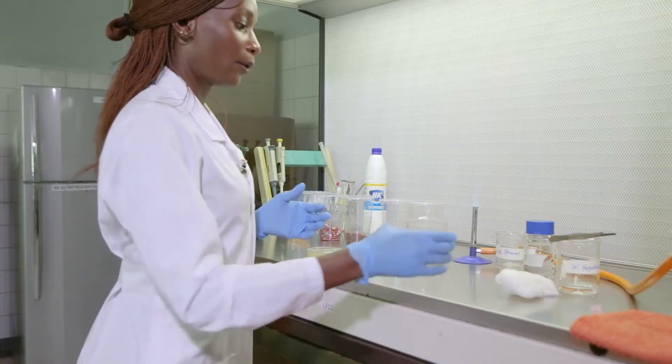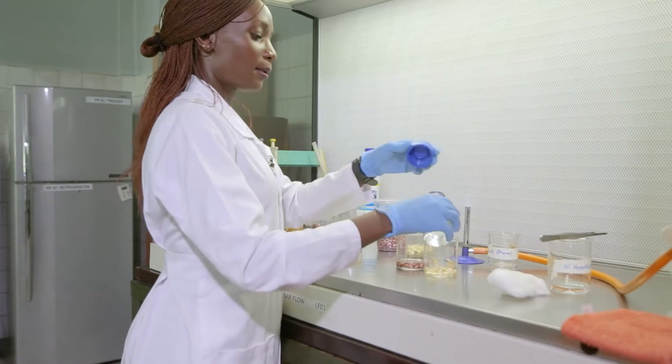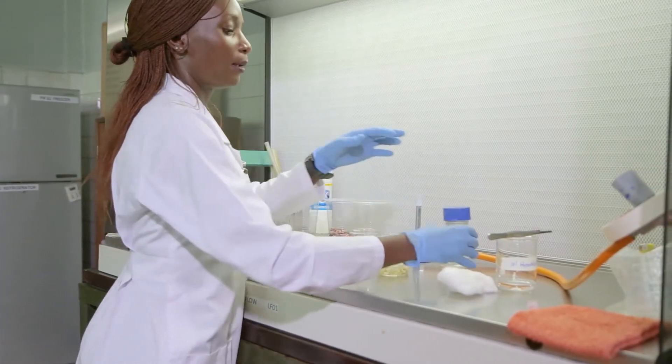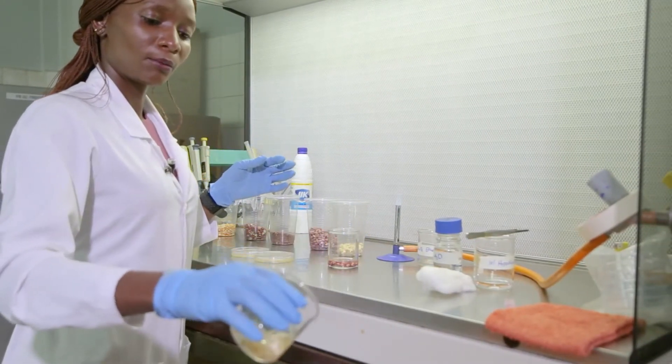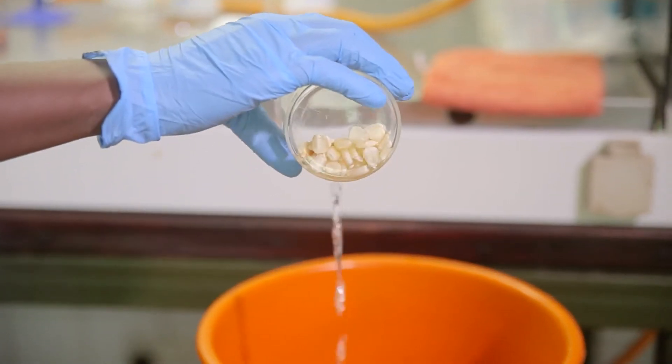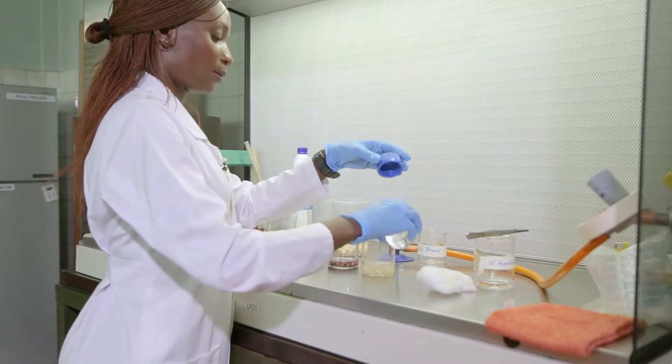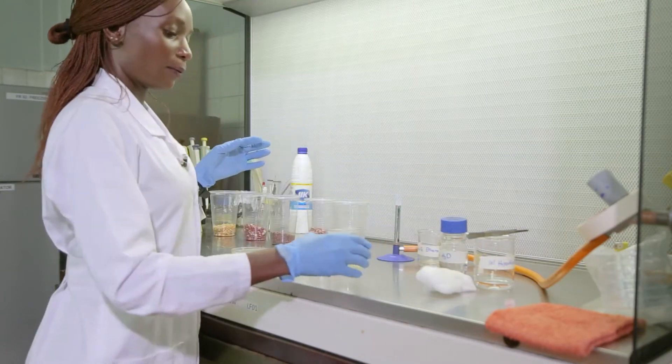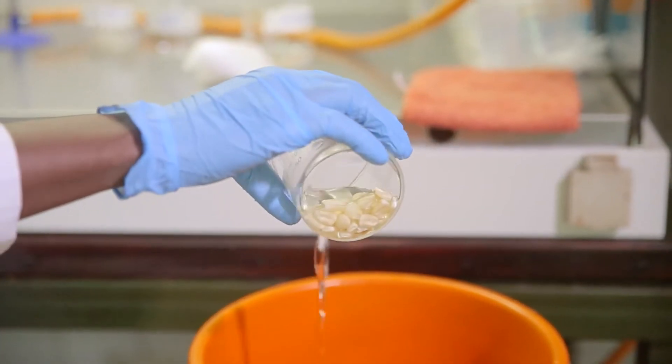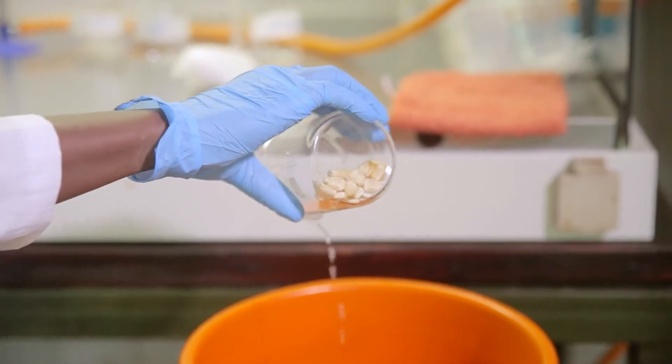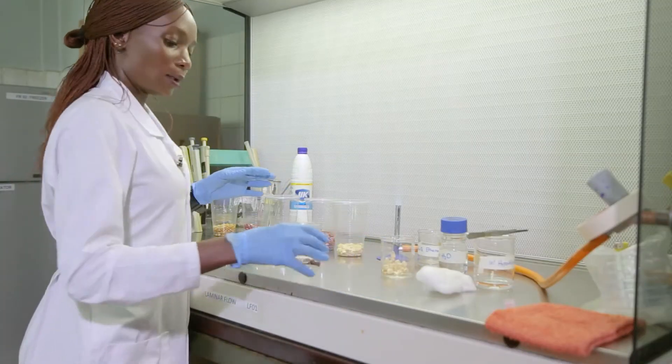So I pour off the hypochlorite and I'm going to rinse off the hypochlorite with my sterile water. You rinse twice to remove any traces of the hypochlorite. So that is done.